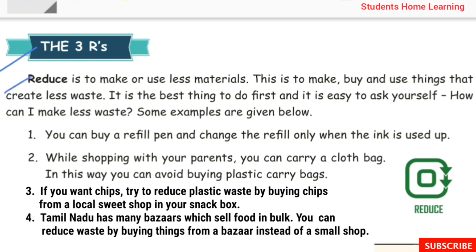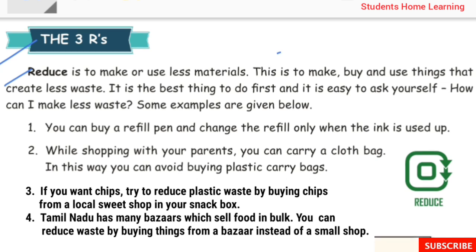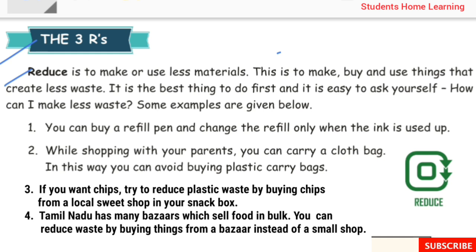The Three R's stand for Reduce, Reuse, and Recycle. We must first reduce, then reuse, and finally recycle. Reduce is to make or use less materials — to make, buy, and use things that create less waste. It is the best thing to do first. Ask yourself: how can I make less waste?